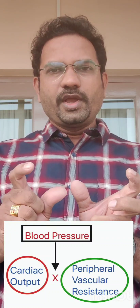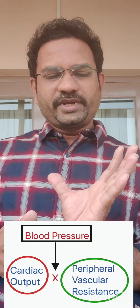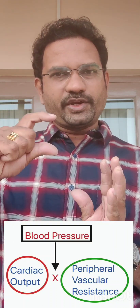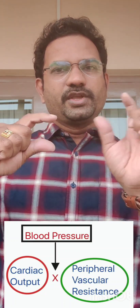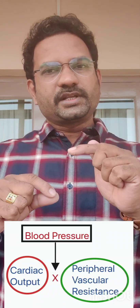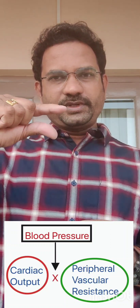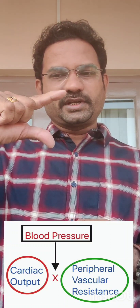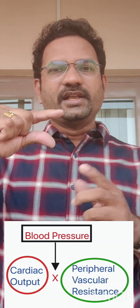Hypertension is determined by two factors: one, cardiac output; and two, peripheral vascular resistance. Cardiac output means the amount of blood pumped by the left ventricle into the aorta per minute — more volume means more pressure. Peripheral vascular resistance refers to whether the aorta dilates or constricts: if it dilates, pressure decreases; if it constricts, pressure increases. Increased resistance leads to increased blood pressure.